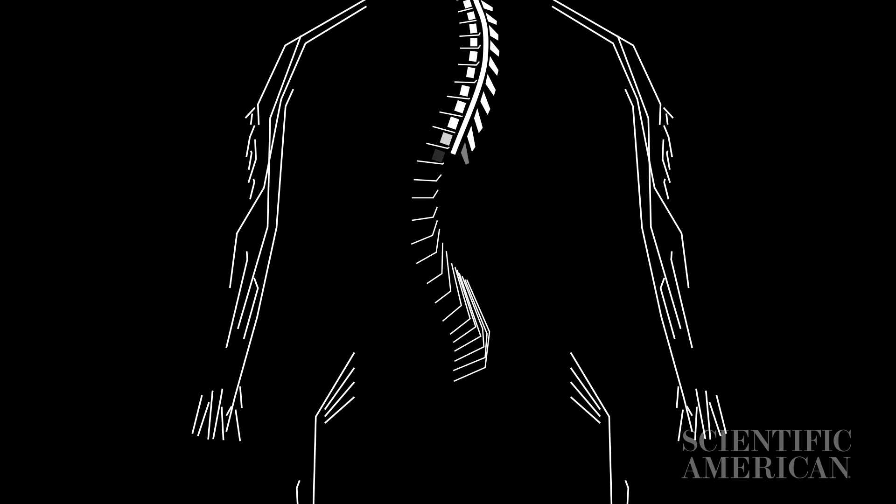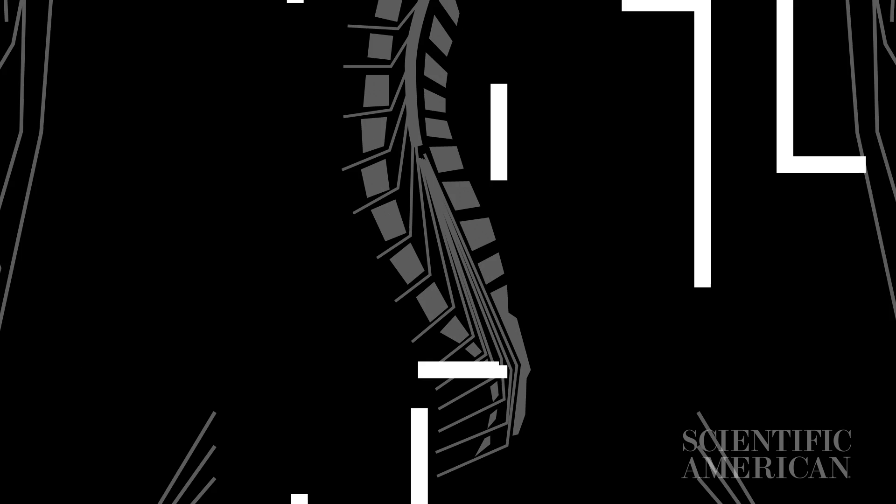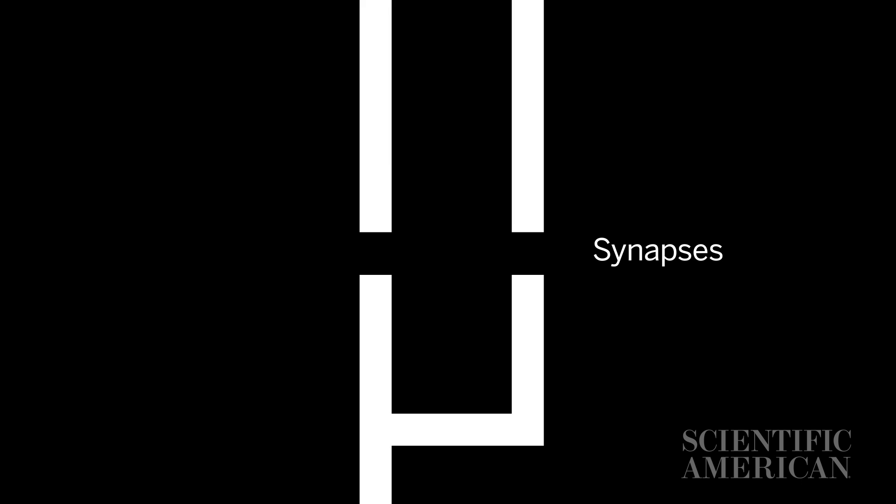Because neurons are minuscule pieces of a giant system, their power lies in their ability to communicate with other neurons. This happens over small gaps called synapses. When neurons communicate frequently, the synapses between them get stronger, making it easier to send future signals.